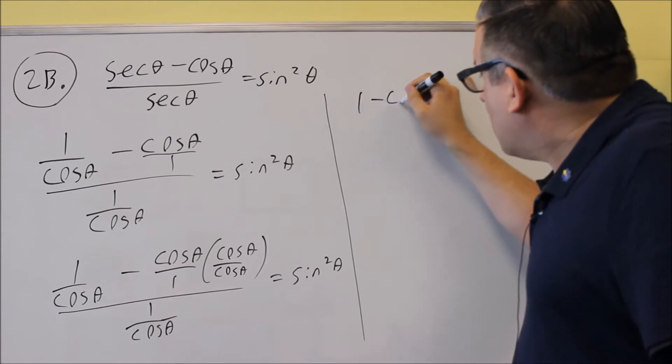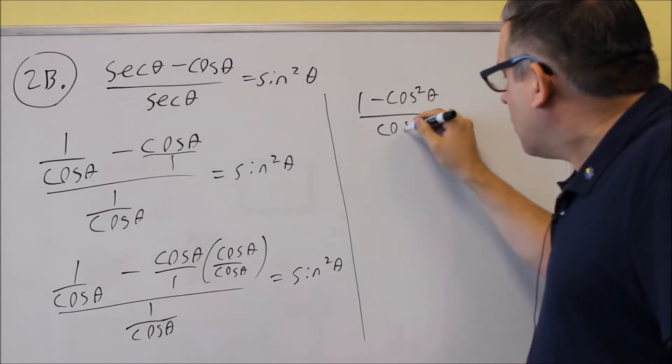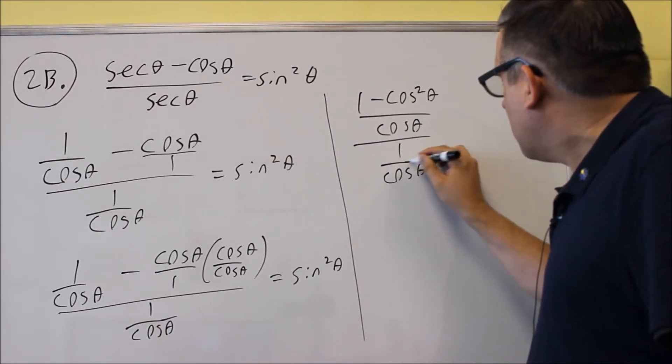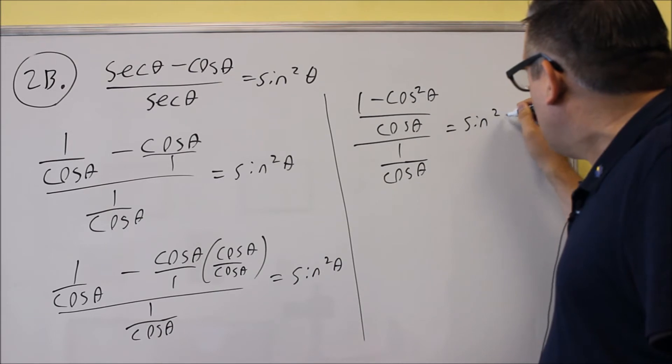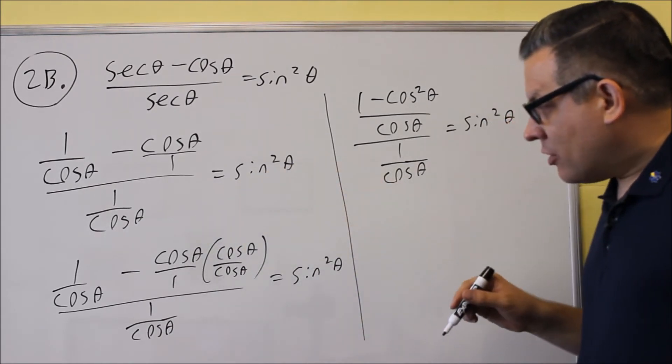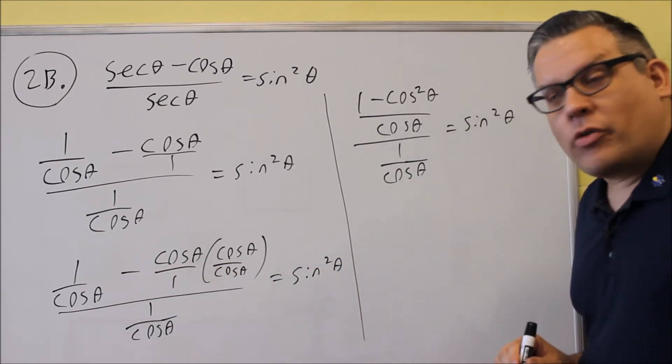This is going to be 1 minus cosine squared over cosine theta, and I still have 1 over cosine theta down below. So I multiply that together, and I put it over a single denominator since I do have the same denominator for both.